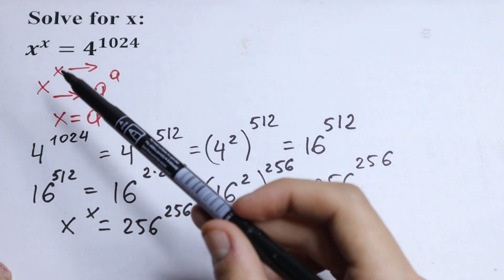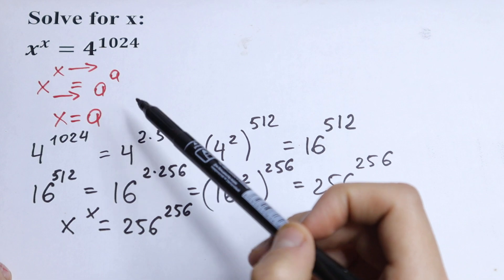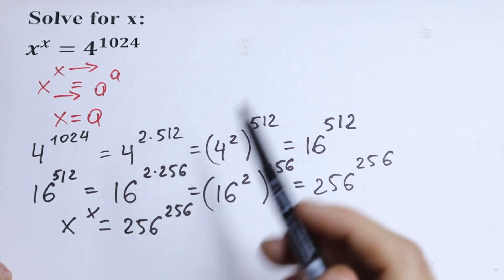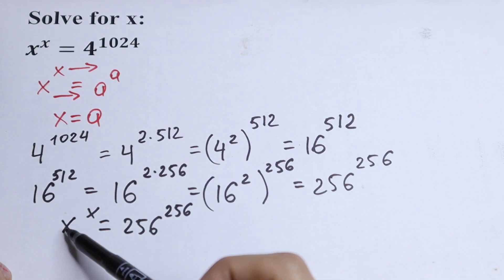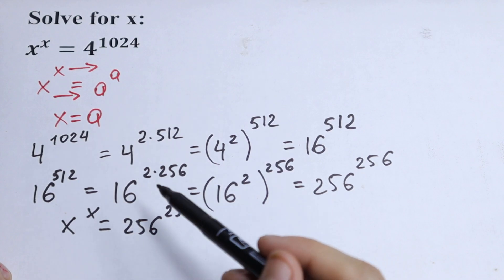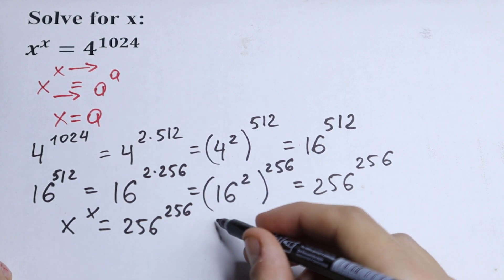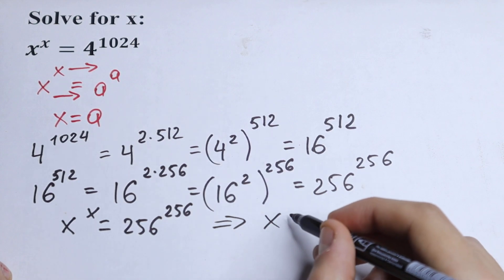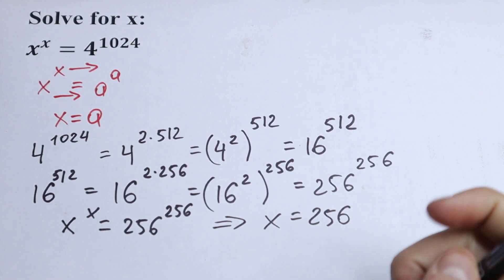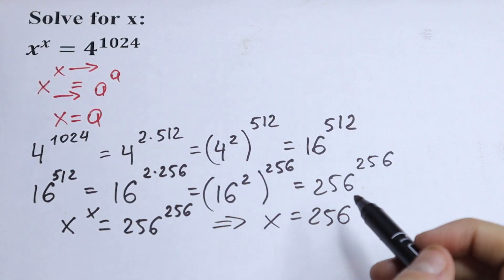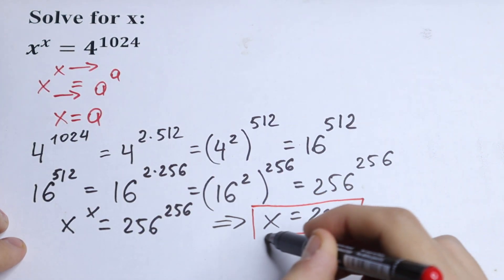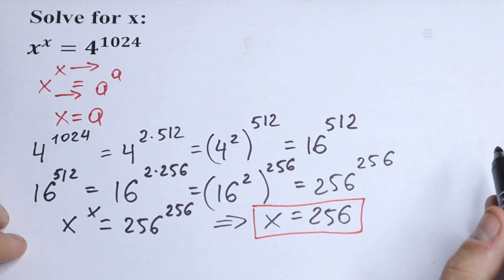And as you can see, we now have x to the power x equal to 256 to the power 256 — exactly the form a to the power a. Same base, same exponent on both sides. So the one and only solution is x equal to 256. We can substitute 256 back in and verify this is the only root.